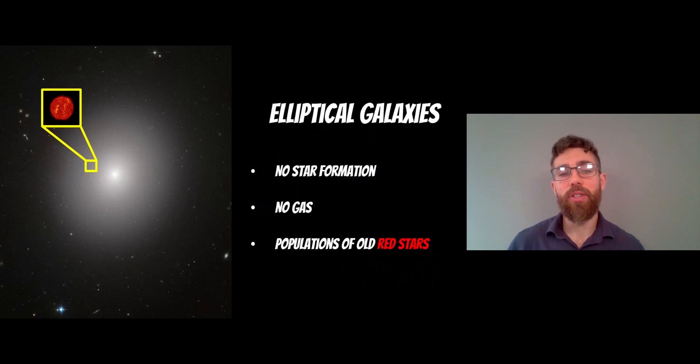Elliptical galaxies don't have any recent star formation because they don't have any gas in them. They're completely gas depleted. And because of that, they have populations of old red stars. They don't have young blue stars because they don't have any gas to basically feed recent star formation. So completely different to spirals. They obviously don't have spiral arms. They're fairly smooth and spherical looking or more cigar shaped, depending on what type it is.